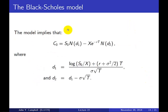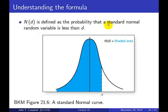Here is the formula. It looks very intimidating, but take a deep breath. The Black-Scholes formula says the price of a call is the stock price times N(D1) minus the discounted exercise price times N(D2). N(D) for any D is the probability that a standard normal random variable is less than D — the shaded area under the normal curve up to that point. You can compute this on a computer, financial calculator, or by looking up a table of the standard normal distribution.